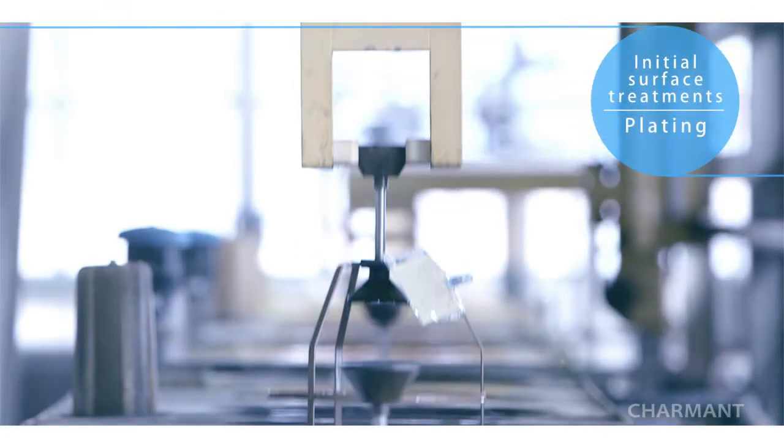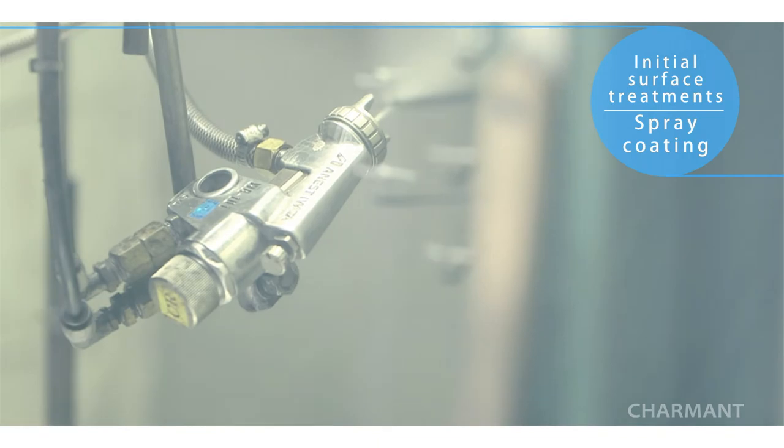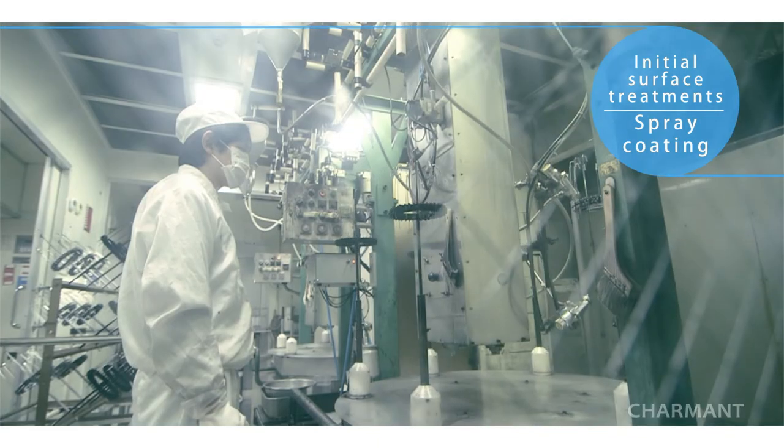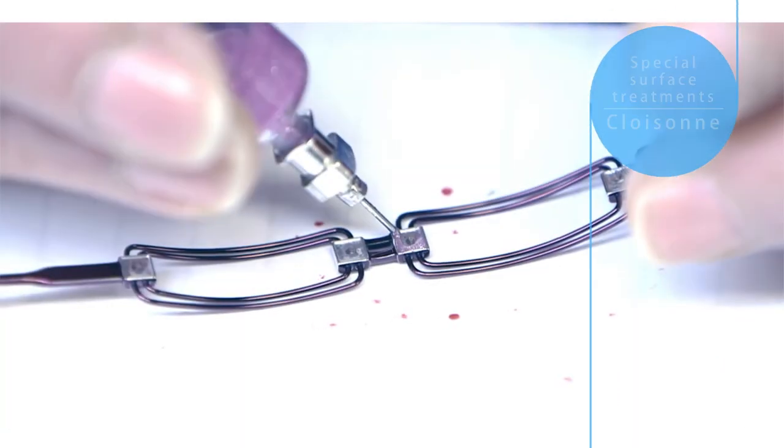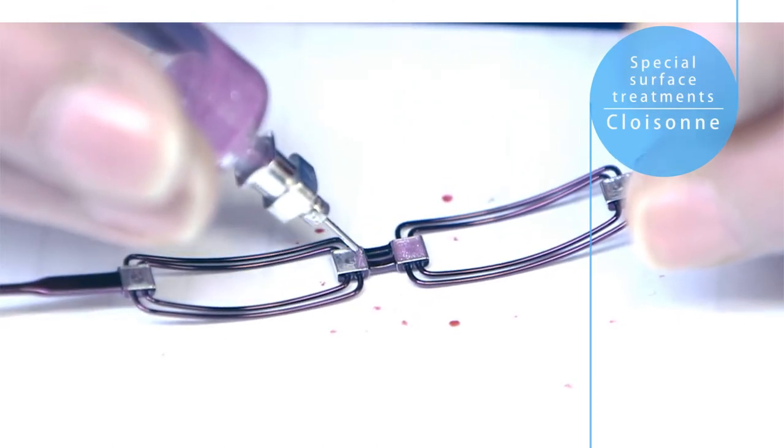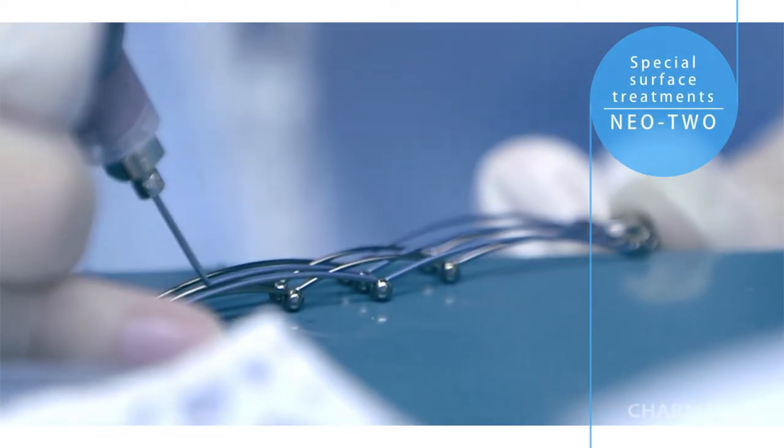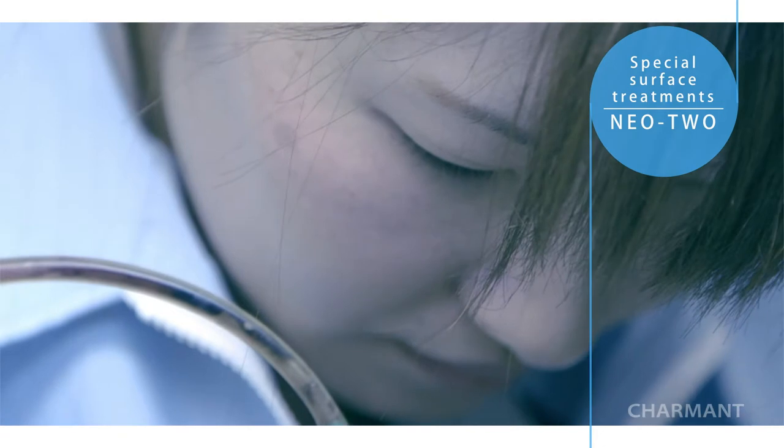The frames are now ready to move on to base surface treatments such as electric plating or spray coloring. Such treatments produce the beautiful hues found in products such as Linear Charmant through the manual work of highly skilled experts using techniques including Cloazanet enamel and Neo2.